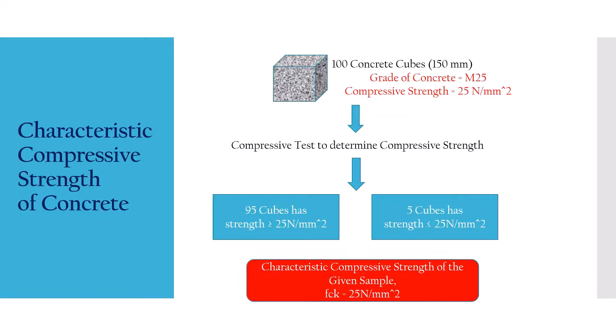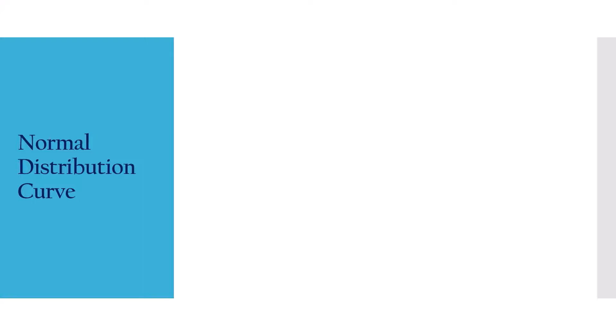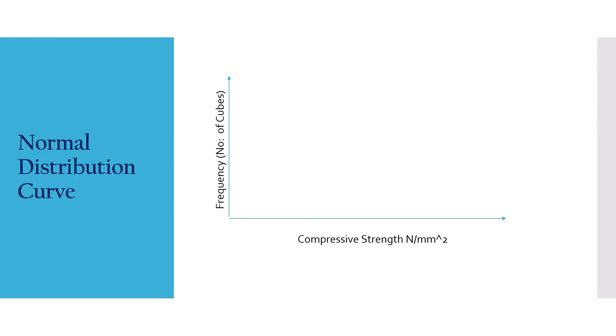So the characteristic compressive strength is defined as the strength of the concrete below which not more than 5% of the test results are expected to fall. Now I can give a more detailed explanation based on a normal distribution curve. Out of these 100 samples, we draw a graph between the frequency (number of cubes) and the compressive strength of each cube.